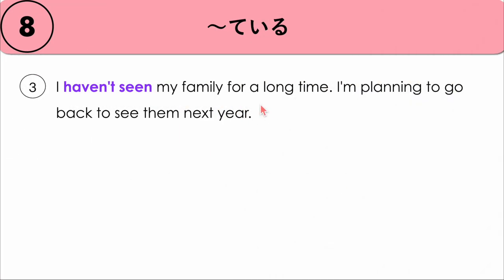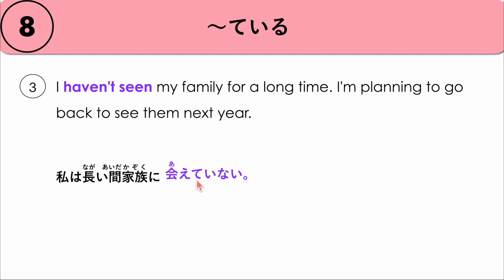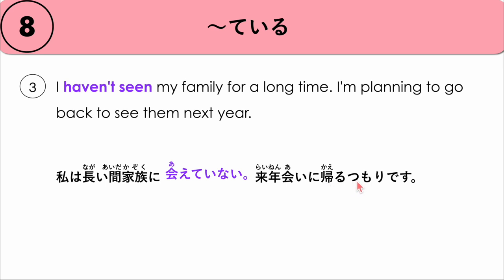Another example: I haven't seen my family for a long time; I'm planning to go back to see them next year. 私は 長い間 家族に 会えていない — hasn't been able to meet them. 来年 会いに 帰る つもりです. 私は 長い間 家族に 会えていない、来年 会いに 帰る つもりです.